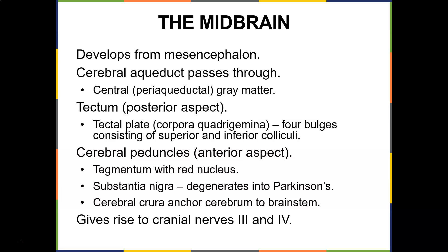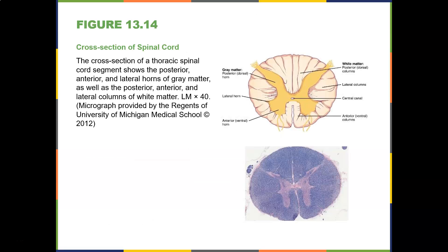The cerebral peduncles are the anterior aspect. The tectum contains the red nucleus. The substantia nigra is what degenerates in Parkinson's disease. The cerebral crura anchor the cerebrum to the brain stem. The midbrain also gives rise to cranial nerves three and four.